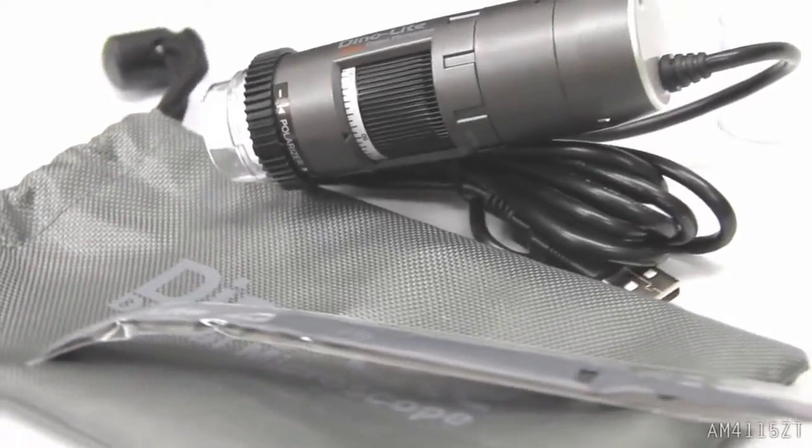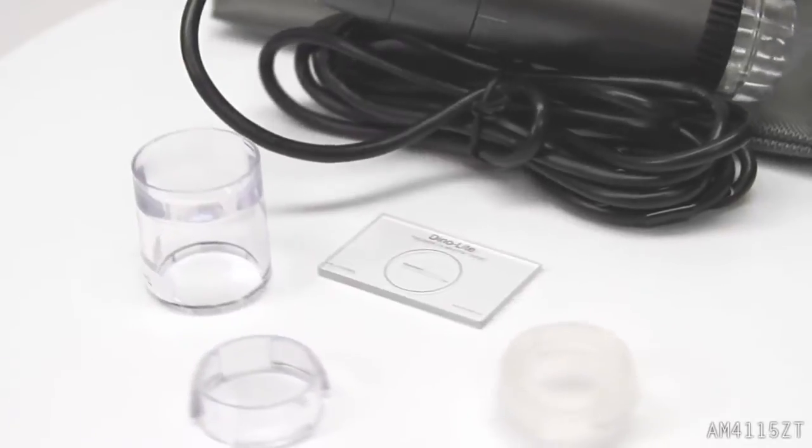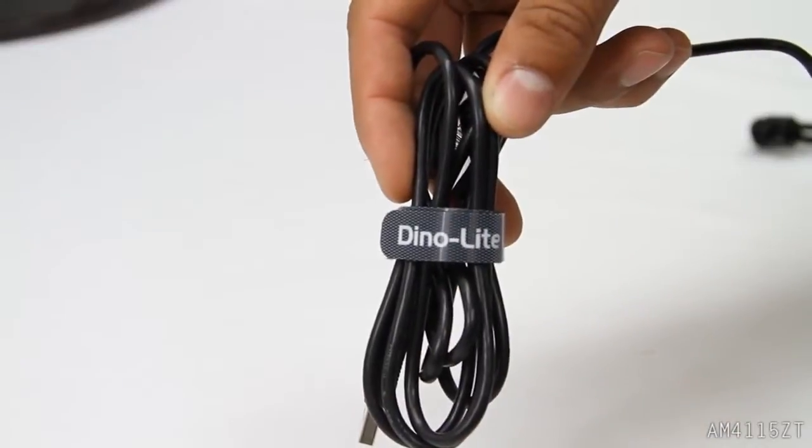The AM4115ZT includes a carry pouch, cable velcro, interchangeable caps, and measurement calibration slide.